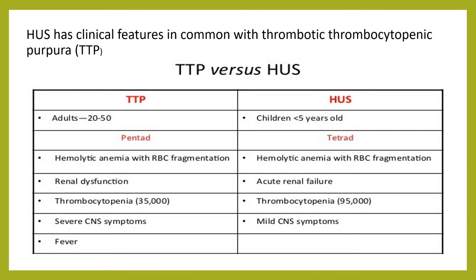However, hemolytic uremic syndrome can include severe neurologic impairment, and TTP can also cause severe renal failure, with involvement of other organ systems also overlapping. As a way to differentiate TTP and HUS, fever is commonly and mainly seen in TTP — it is part of the pentad of TTP. Severe CNS manifestation is more common in TTP than HUS, and TTP is more common in adults, whereas HUS is more common in children.